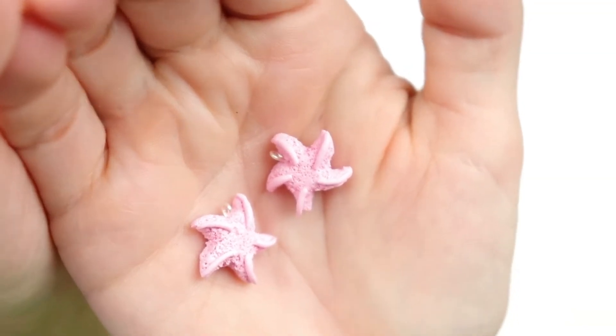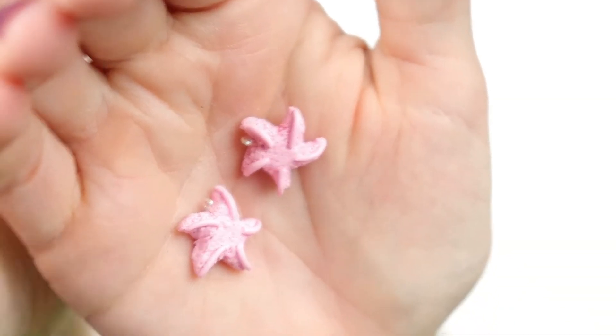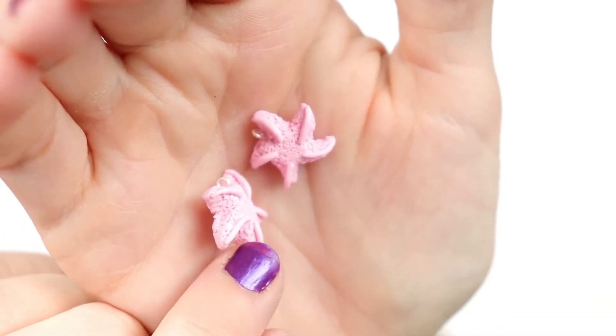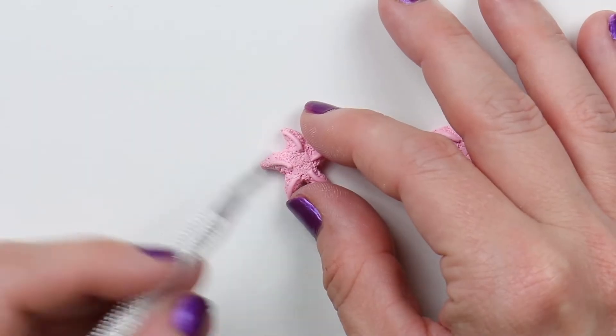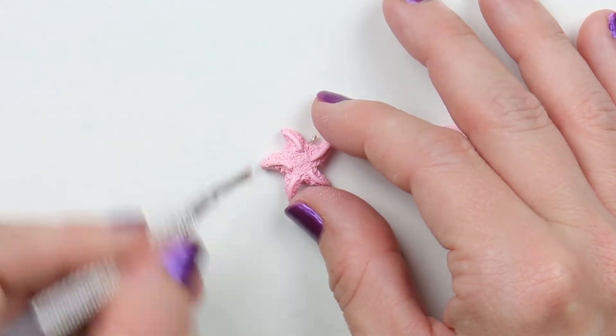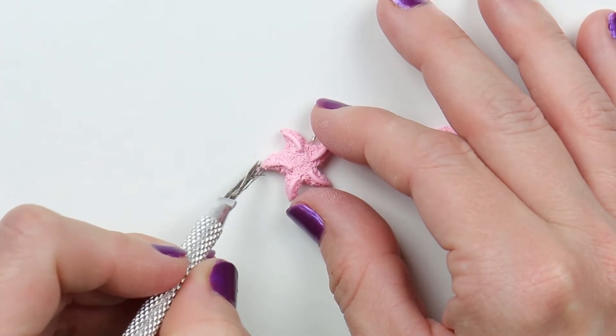Once you're done they should look like this. Now texture those strips of clay you just added. This is optional. You can leave them untextured if you want.